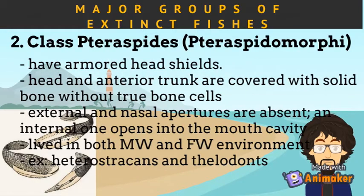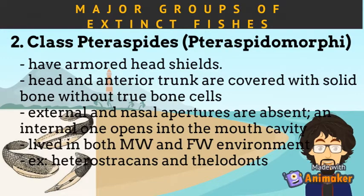Class Teraspides or Teraspidomorphy have armored head shields. Their head and anterior trunk are covered with solid bone without true bone cells. They don't have external nasal apertures, and an internal one opens into the mouth cavity. They lived in both marine and freshwater environments. Examples are the Heterostrachans and Thelodonts.